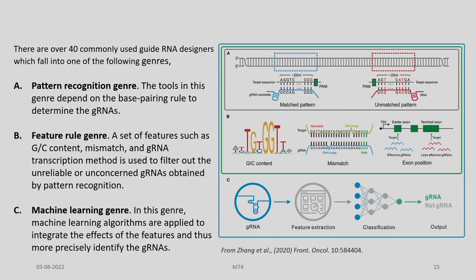There are over 40 commonly used guide RNA designers which fall into one of the following genres. The first genre is the pattern recognition genre — tools in this genre depend on the base-pairing rule to determine the gRNAs. The second is the feature rule genre, where a set of features such as GC content, mismatches, and gRNA transcription method is used to filter out unreliable gRNAs obtained by pattern recognition. The third genre is the machine learning genre, where machine learning algorithms are applied to integrate the effects of features and more precisely identify the gRNAs.